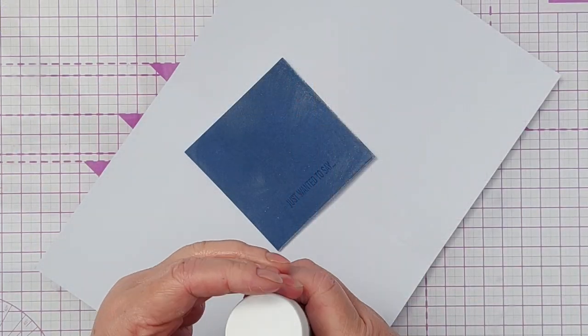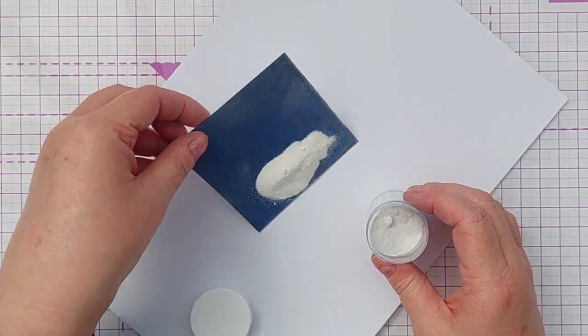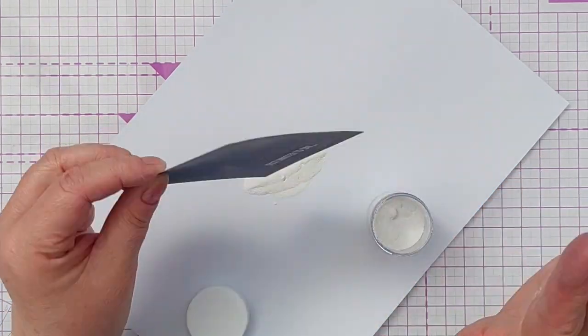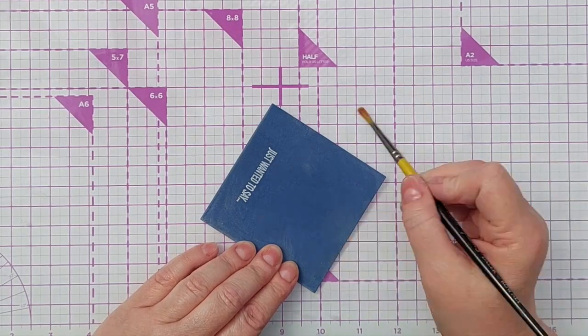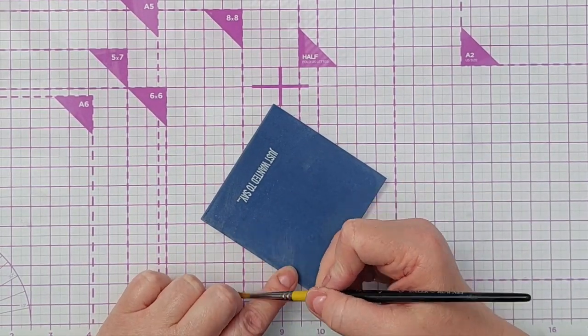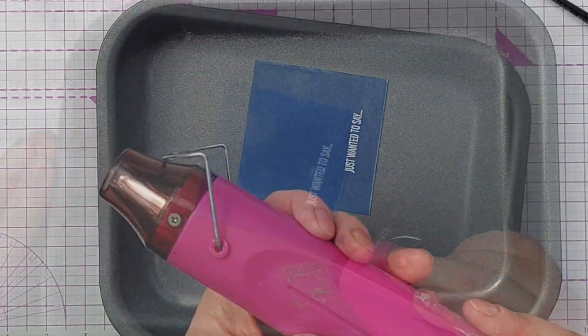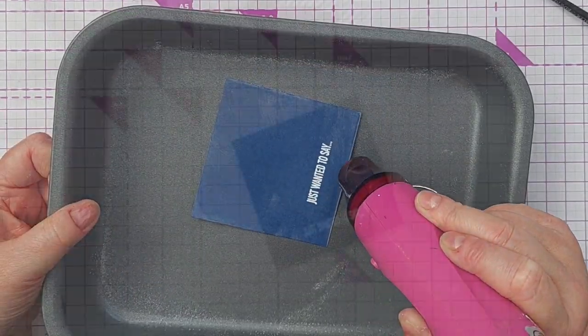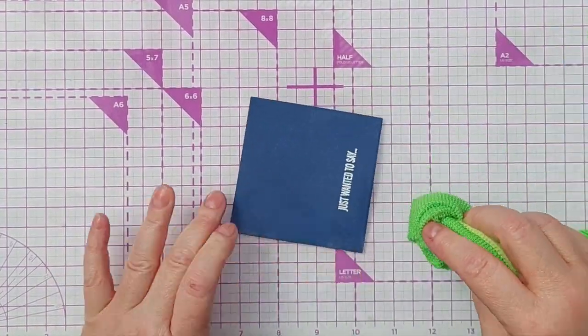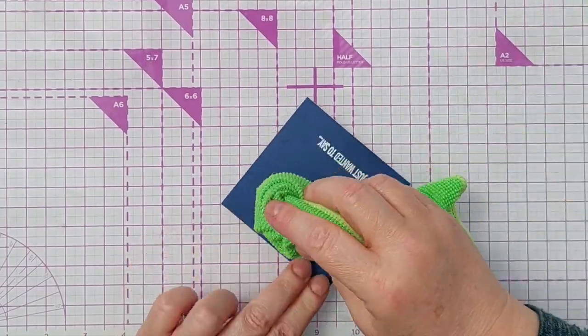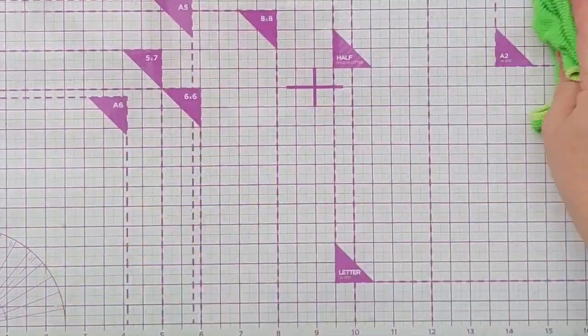I'm going to stamp that with embossing ink and I've got this detail white embossing powder. I'm going to shake that on there, give it a good tap off. There's a few little stray bits which I can brush away so they don't stick. I'm going to heat that with my heat tool. So that's melted and cooled so I can just brush off the cornflour with a microfiber cloth and that's all lovely and blue again.